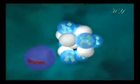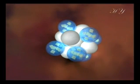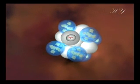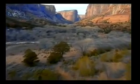The protons and neutrons inside the nucleus of the atom constitute 99.95% of the mass of the atom and are the source of the variety of elements on earth.